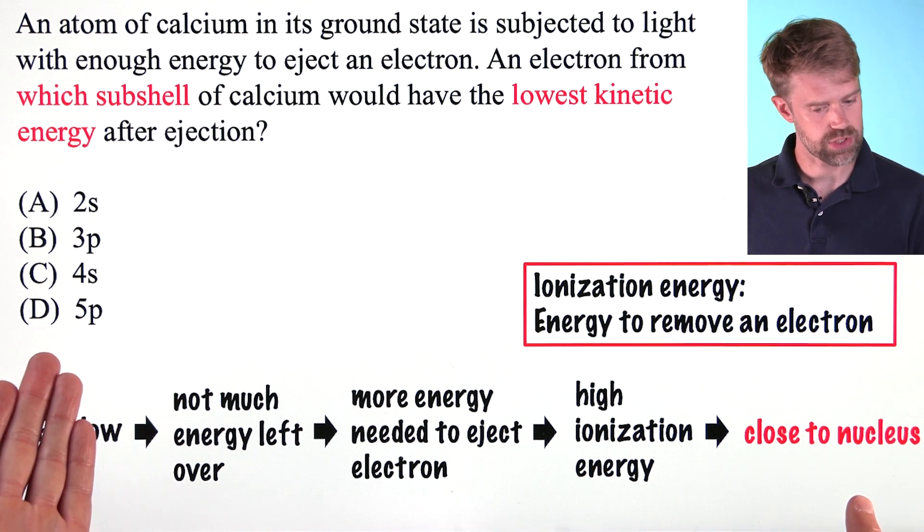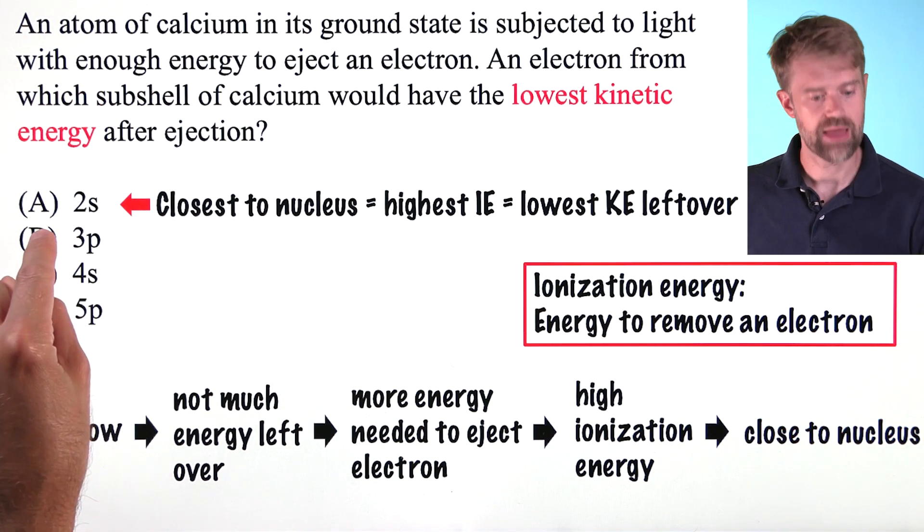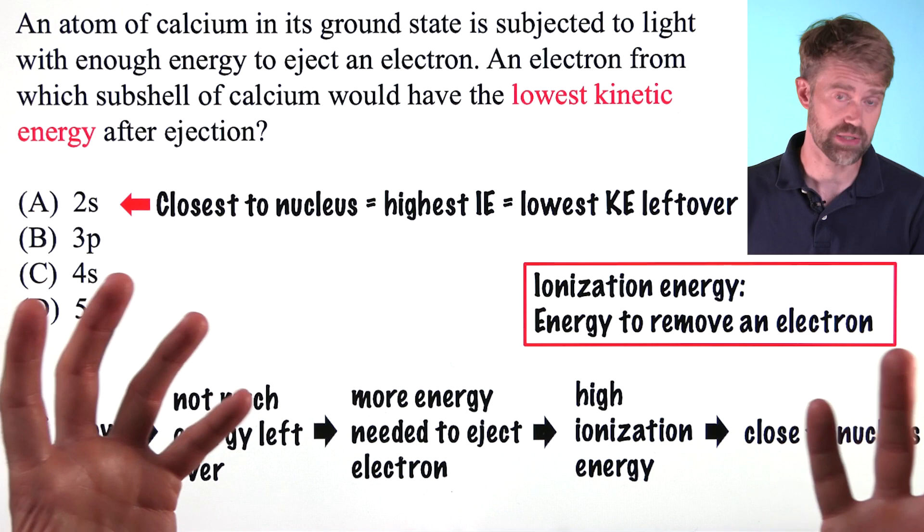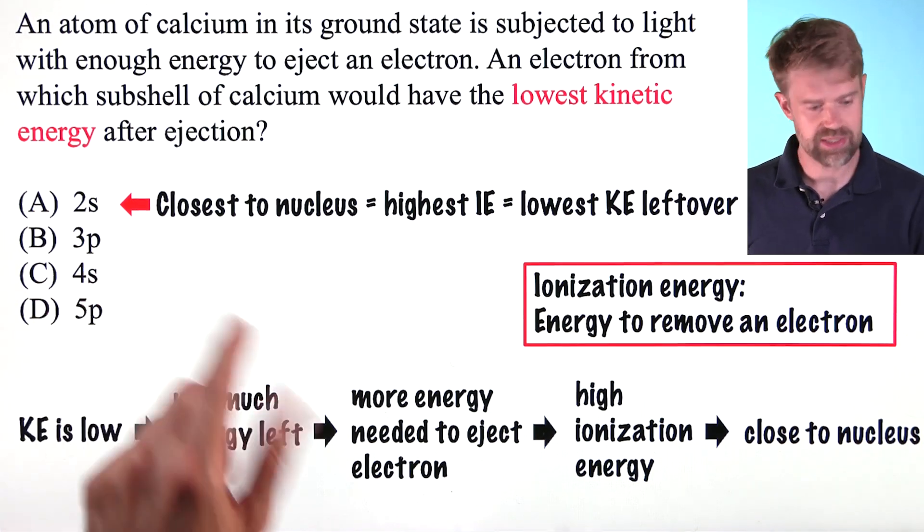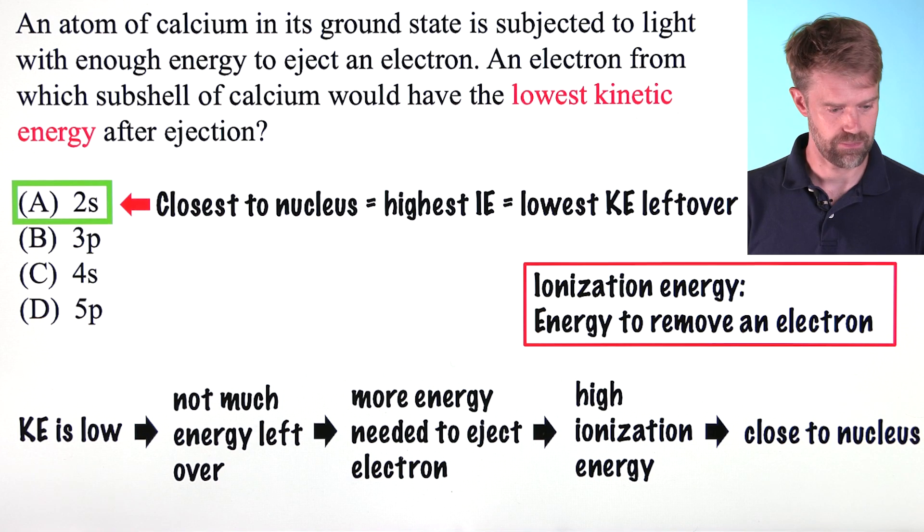So, we're looking for the subshell here that's closest to the nucleus and that's 2s, which is much closer than the others. And in fact, calcium in its ground state doesn't even have electrons in the 5p subshell. So that's our answer, A.